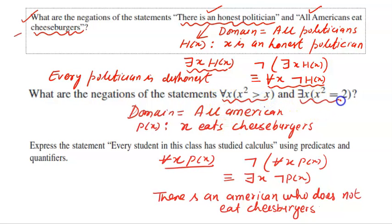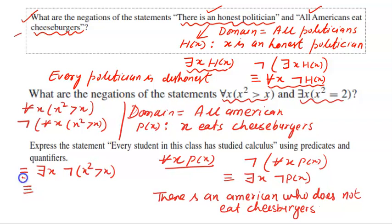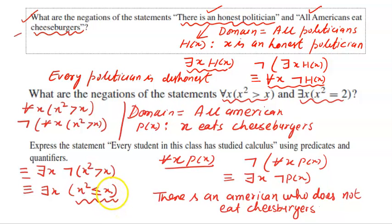Now the next problem: what is the negation of 'for all x, x² > x'? The negation of 'for all x, x² > x' is 'there exists x such that x² is not greater than x', which is equivalent to 'there exists x such that x² ≤ x'. You should write x² ≤ x rather than just x² < x.